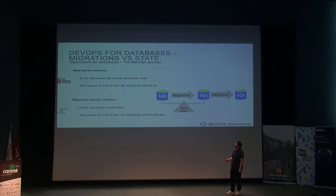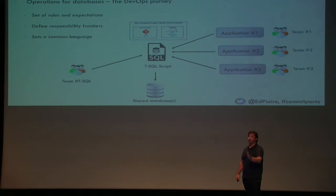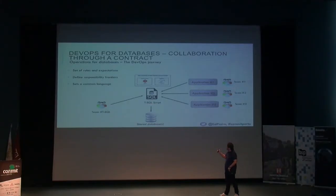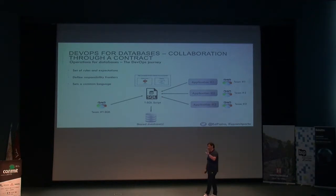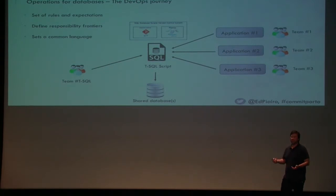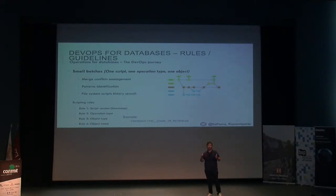In the state approach, a generator does it for you, and then the database administrator checks if it makes sense — because context is very important. So we decided to go mainly with migrations. We set a set of rules and expectations, defined frontiers — who is responsible for what. The result is we have a system, could be Git or Mercurial. We use the tool Flyway. And everyone had to write a migration, put it on source control. Then someone puts it on the pipeline, and that pipeline deploys automatically to the develop or test environment, and then someone validates that change.